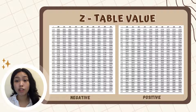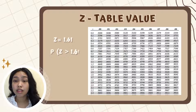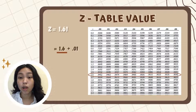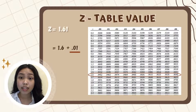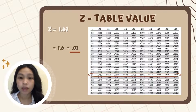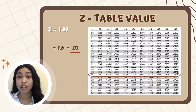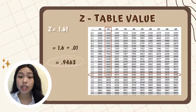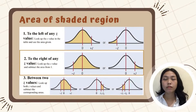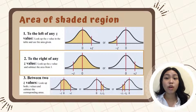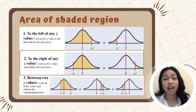Next, gamitin na natin yung Z-table para ma-determine natin yung Z-value. Since positive si 1.61, yung positive table yung gagamitin natin. Una, kukuhain natin yung 1.6 muna at hanapin natin sa table yung row kung nasaan yung 1.6. Then, i-add natin yung remainder dun sa Z, which is yung 0.01, at hanapin natin yung column niya. Tingnan natin kung saan value sila nag-intersect or nag-meet — dito, sa 0.9463 sila nag-intersect, so ito ngayon yung magiging area. Pero, since more than 9 years yung hinahanap natin, magsosubstract tayo ng 1 para makuha yung nasa right side of the curve.